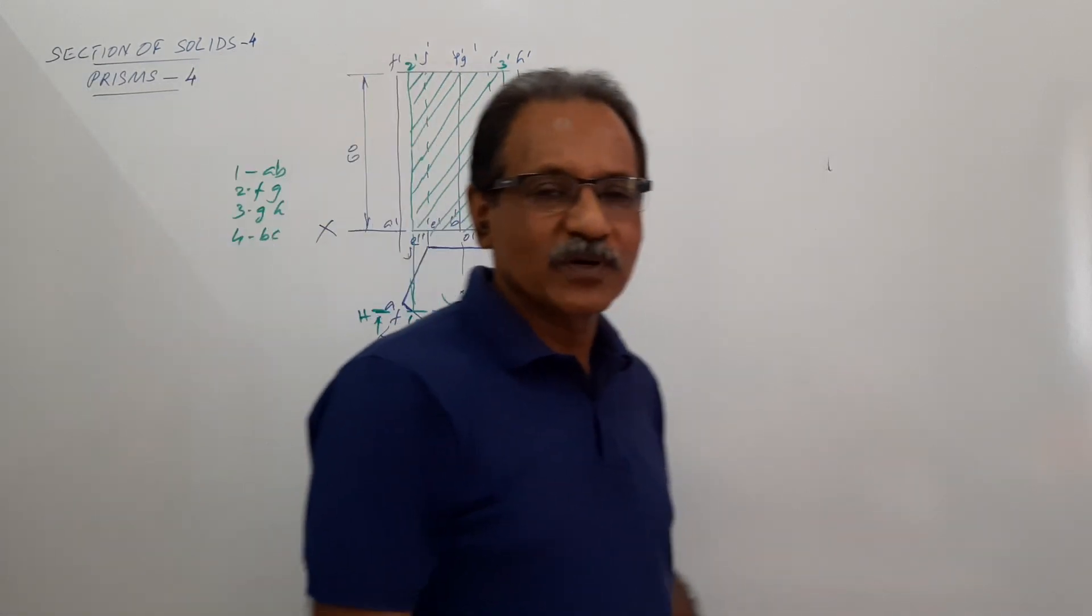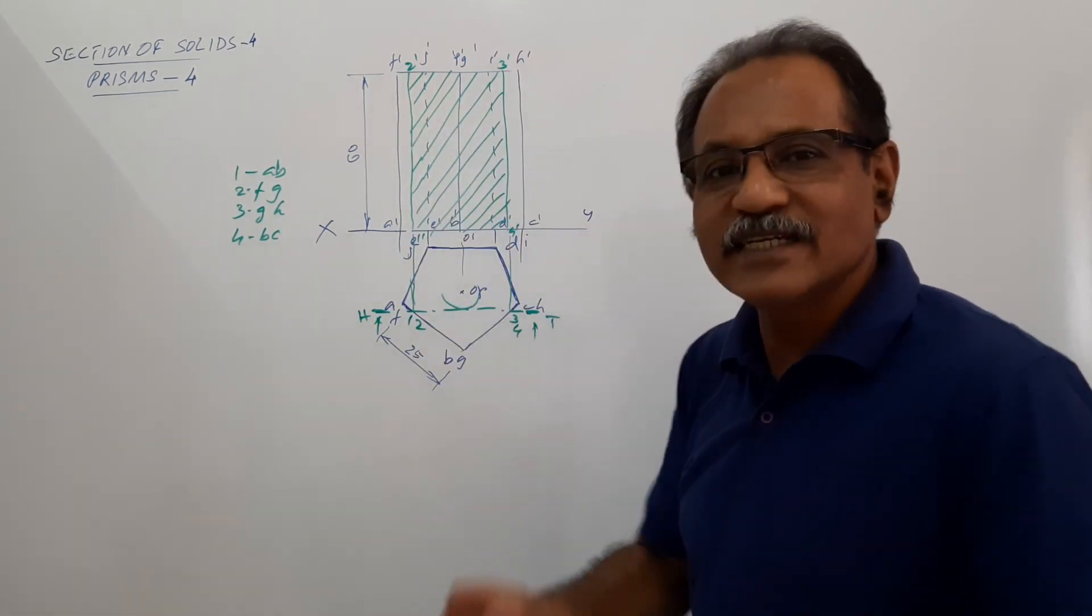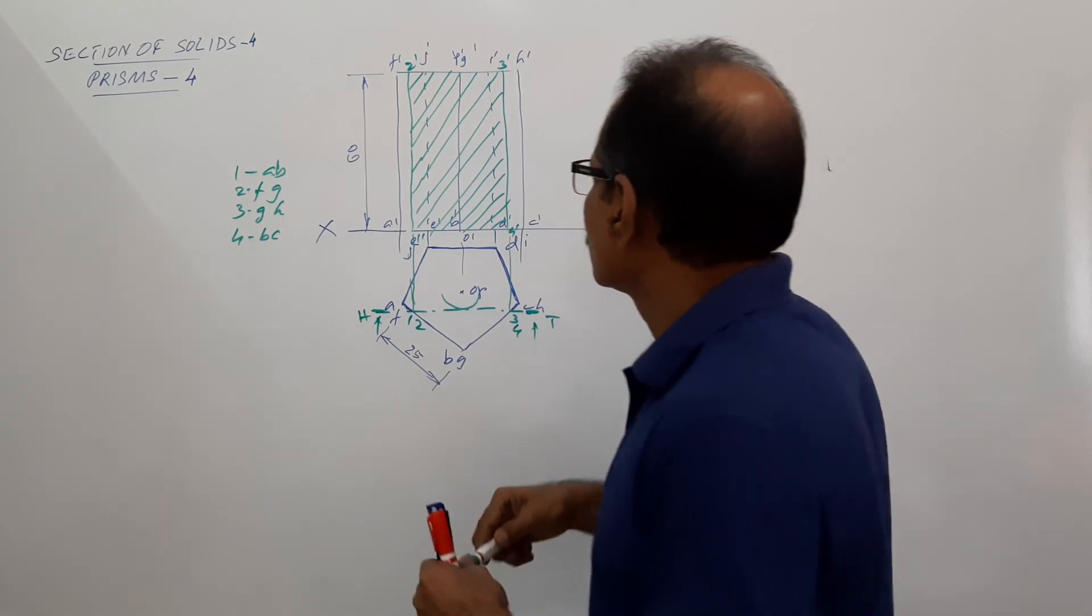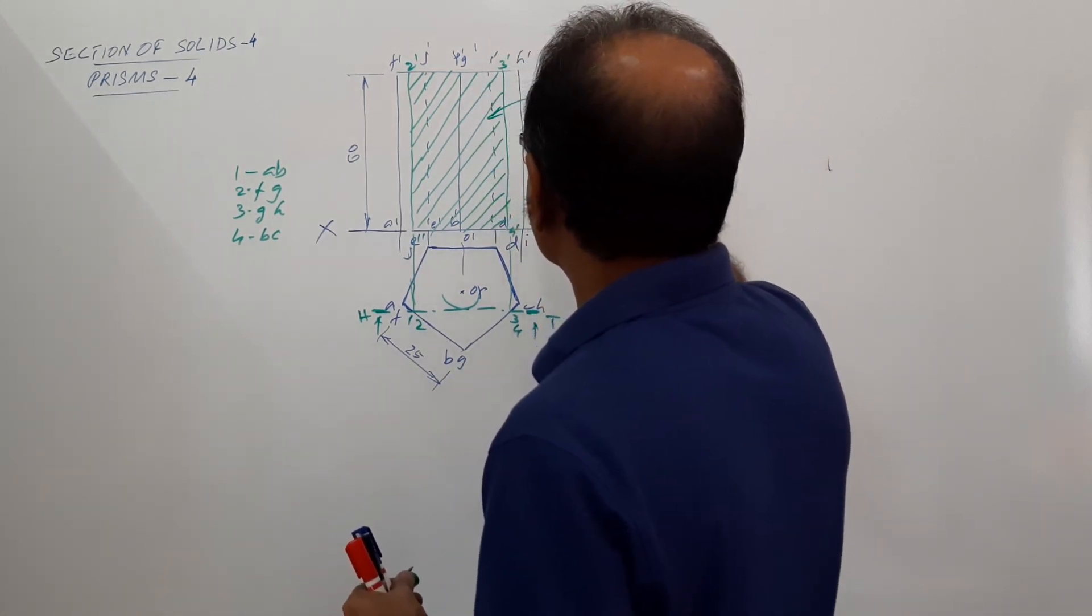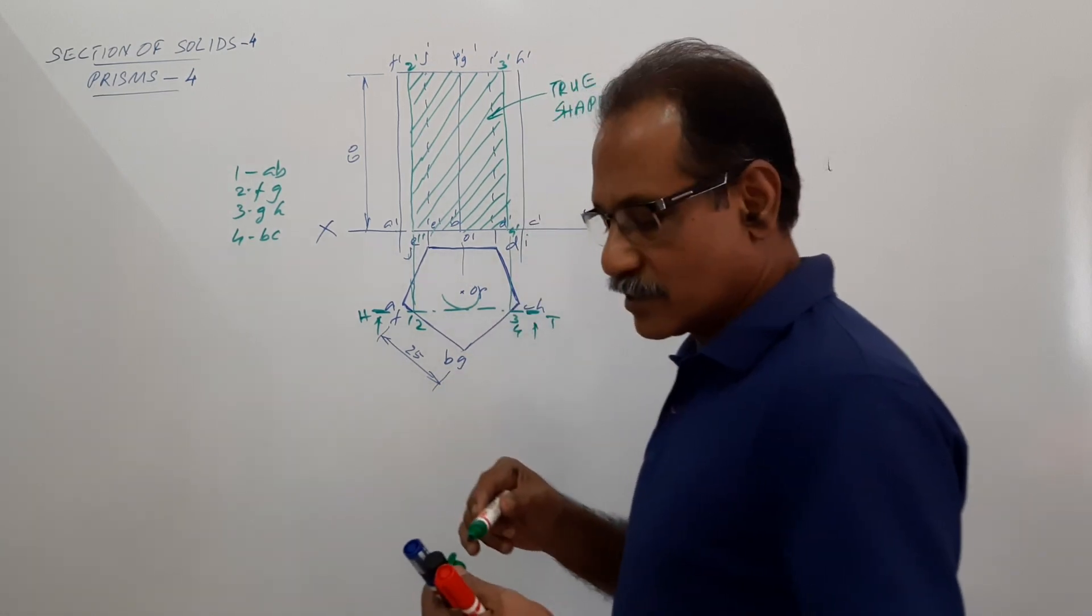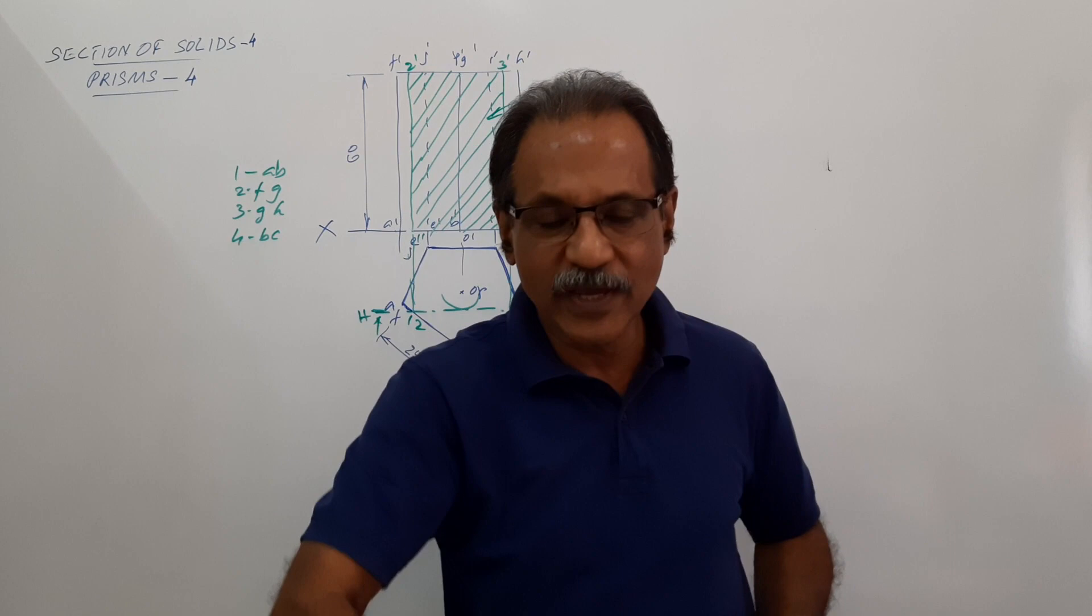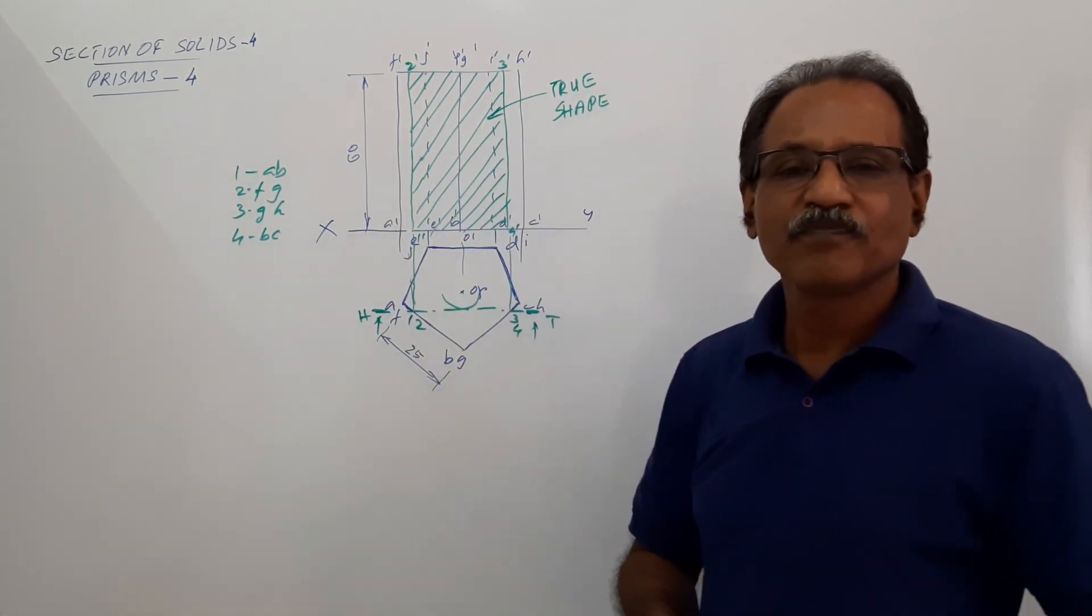What about true shape? Since the cutting plane is parallel to VP, 1 dash, 2 dash, 3 dash, 4 dash itself is true shape. So there is no need of drawing an additional true shape. This itself is true shape. I hope you understand. Since the cutting plane is parallel to VP, the sectional elevation itself gives true shape. Very simple question.